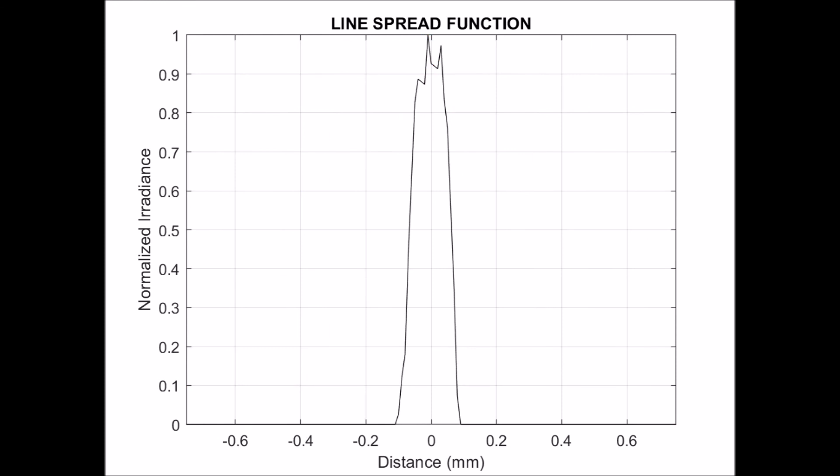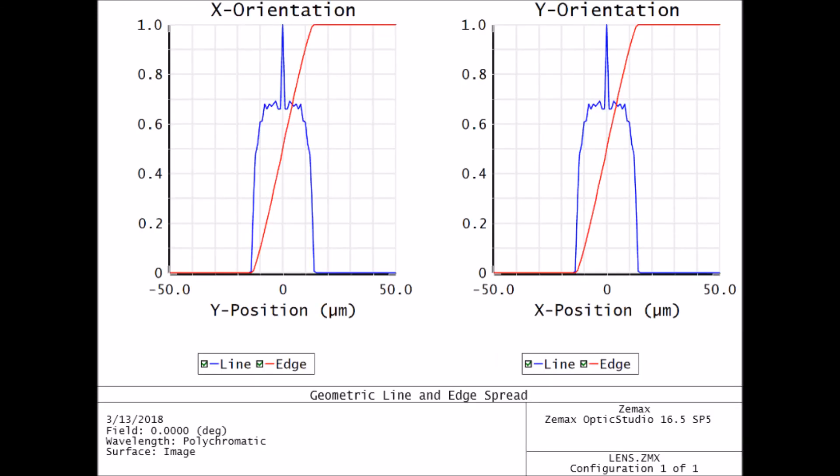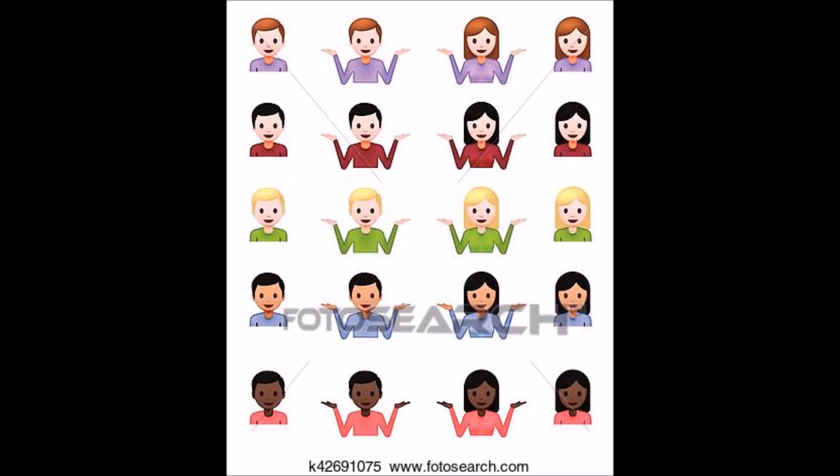Here we see the line spread function that we had recovered from our data, which is close to what we had seen from ZEMAX when we had plotted it theoretically. Our sources of errors can be contributed to the fact that everything that could have gone mechanically wrong did.